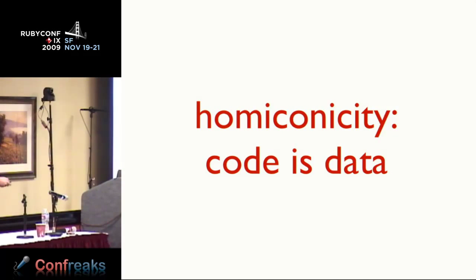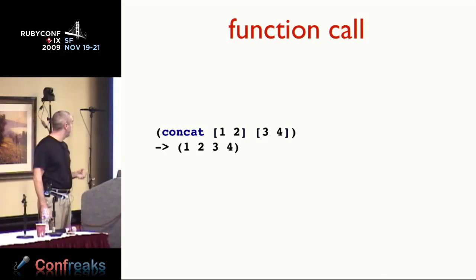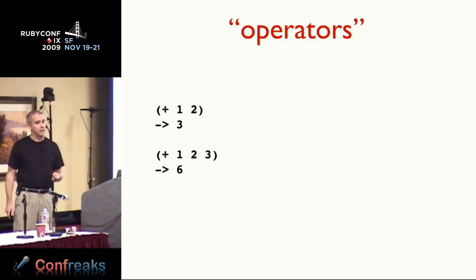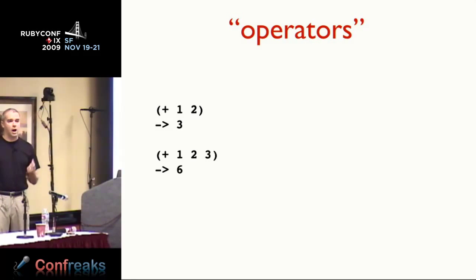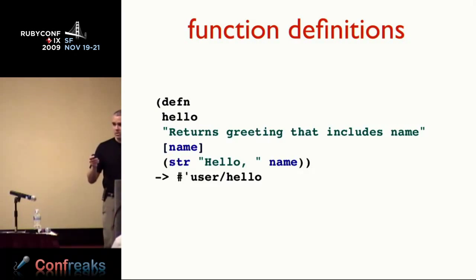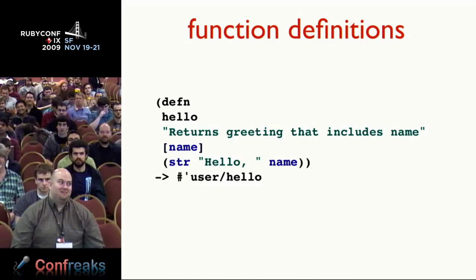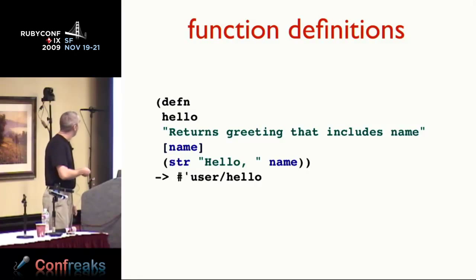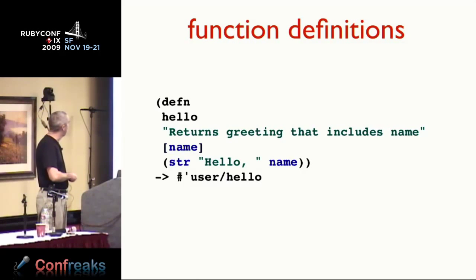Code is just data. If you want to make a function call in Clojure, it's just the function call and then some arguments inside of a list. Operators are also just data, and we have prefix notation so operators sit in function position — I say 'plus one two' instead of 'one plus two.' If I want to define a function, I give it a name, a documentation string, an argument list which is just a vector, and then the body — the implementation — is just lists. All just data.